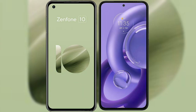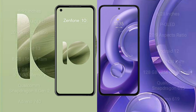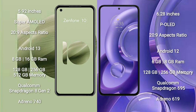I will compare the new Asus Zenfone 10 with Motorola S30 new. Asus Zenfone 10 comes with a 5.92-inch Super AMOLED display and 20:9 aspect ratio. Motorola S30 new comes with a 6.28-inch OLED display and 20:9 aspect ratio.